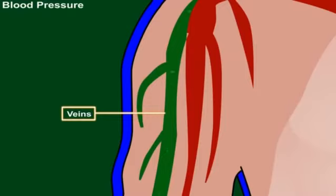So blood pressure is low in the veins when compared to the arteries.